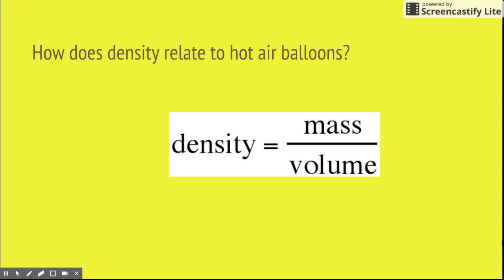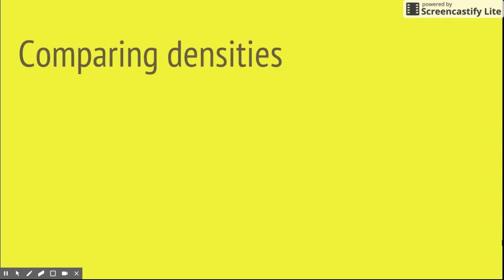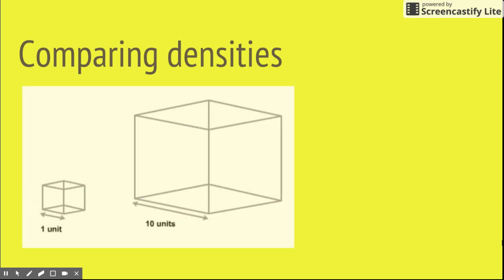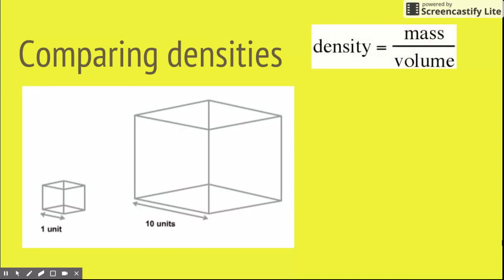Using this property of matter, we can determine if an object will float or sink in a particular medium. When we compare densities, we have to look at two objects. We look at an object's mass, and we look at an object's volume.